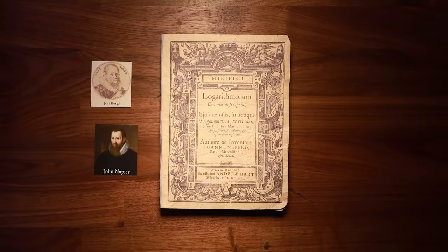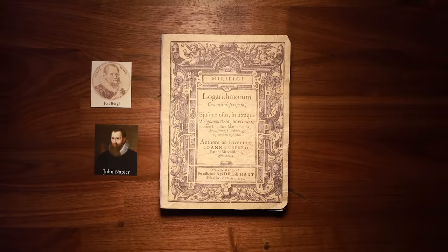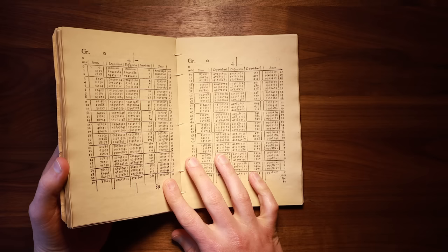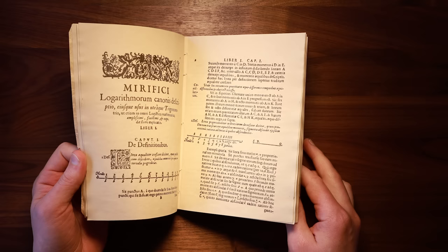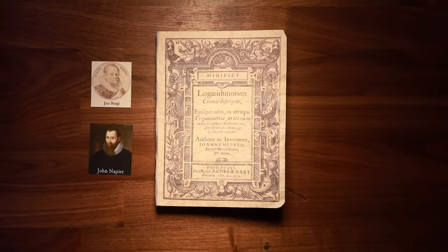In the ten or so years that Berge delayed publication, the Scottish mathematician John Napier independently made the same discovery, although with a more complex and less intuitive derivation, and published a full book of tables in 1614.